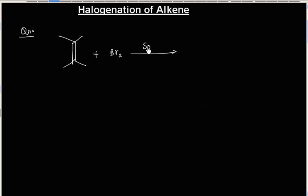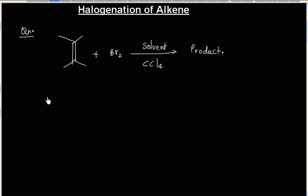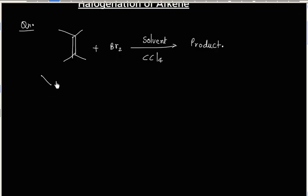The solvent used in this reaction is CCl4, that is carbon tetrachloride. This is halogenation of an alkene. The alkene acts as a nucleophile and bromine acts as an electrophile.